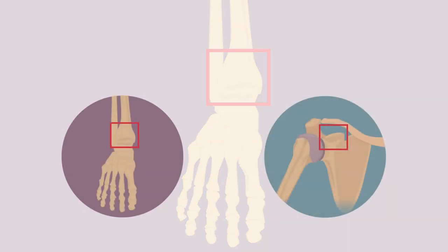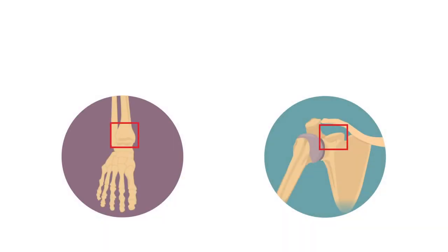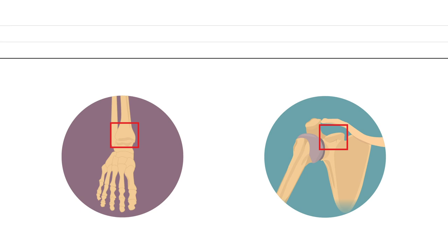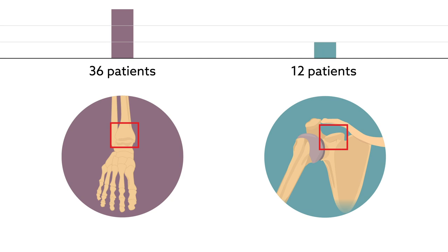To reach this conclusion, the team retrospectively reviewed the radiographic findings from 36 patients who underwent tibial allograft and 12 patients who underwent coracoid autograft procedures to manage anterior shoulder instability with glenoid bone loss.